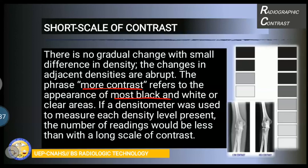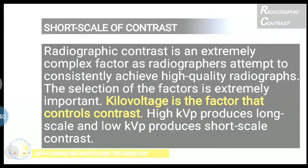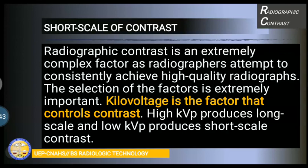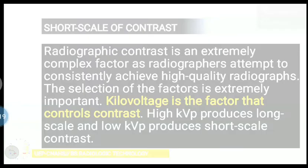To review: radiographic contrast is an extremely complex factor as radiographers attempt to consistently achieve high quality. Kilovoltage is the factor that controls contrast. High KVP produces long scale of contrast — for example, chest radiography. Low KVP produces short scale of contrast — for example, bone radiography. Bone radiography uses lower KVP factors.